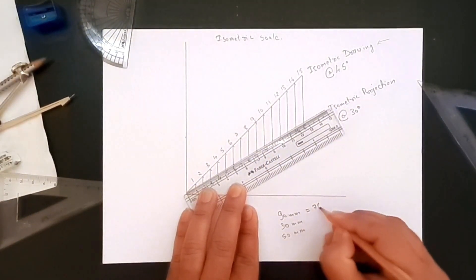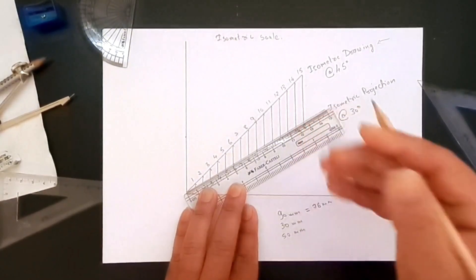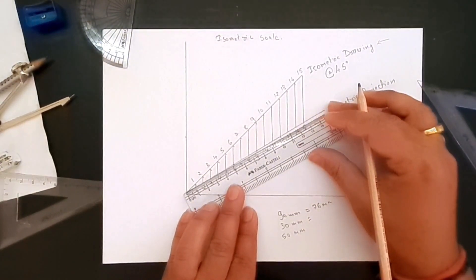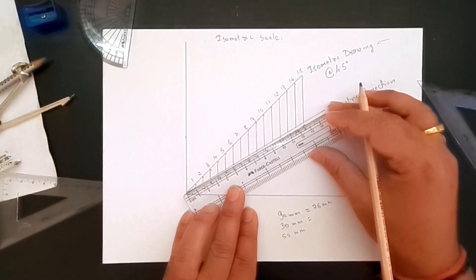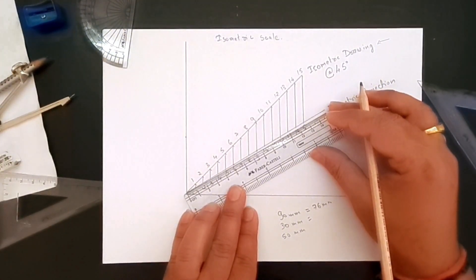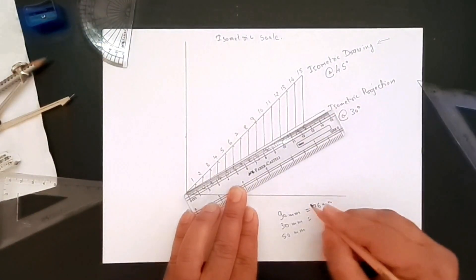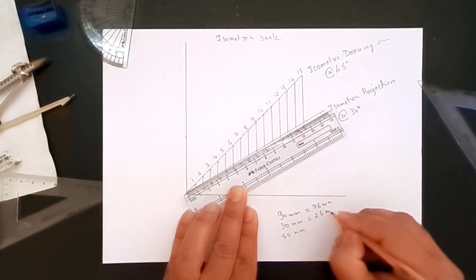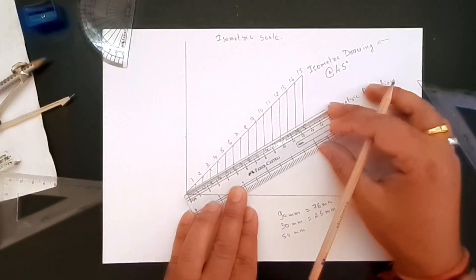30 millimeters becomes 25. And this is rough, I'm just trying to get the numbers. 50 millimeters...